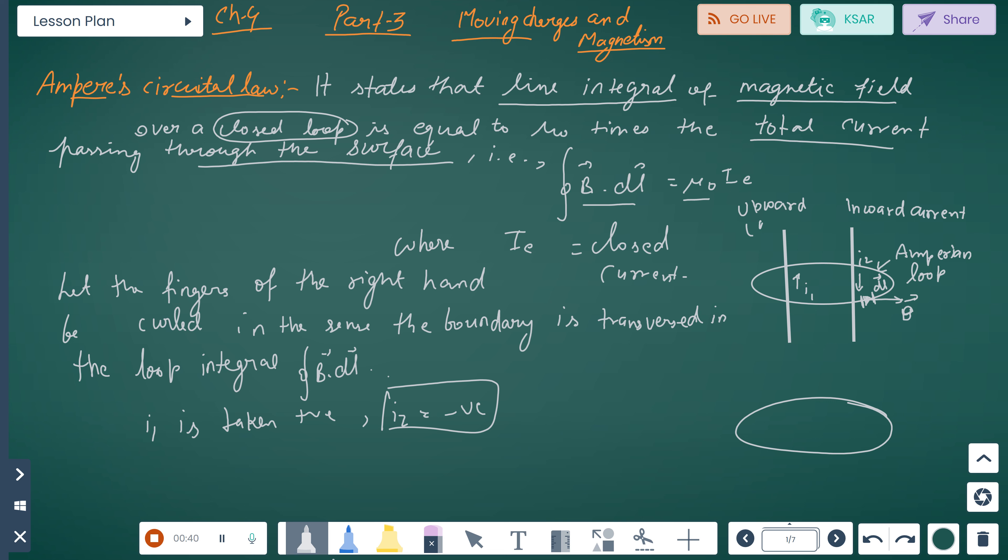We have an upward current and inward current in a closed loop, I₁ and I₂. Here is the Ampere loop with B and dl where Ie is the enclosed current. Let fingers of the right hand be curled in the sense of the boundary traversing the loop integral. In integration, B·dl, I₁ is taken as positive for upward current.